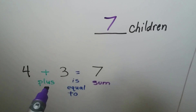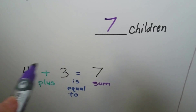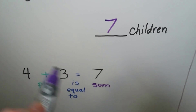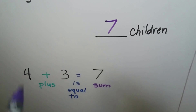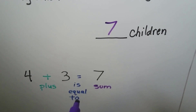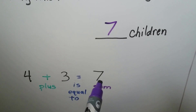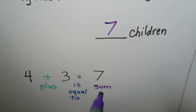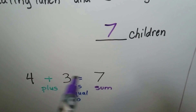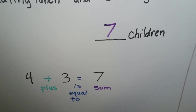This is a plus sign. It means we're adding these two numbers together. This is an equal sign. It means these two numbers are equal to this number, which is the sum. The sum is the answer in an addition sentence.